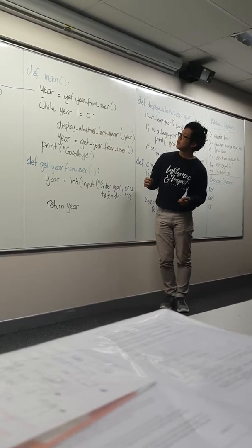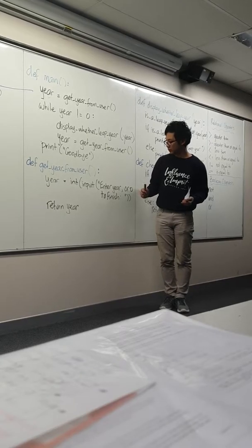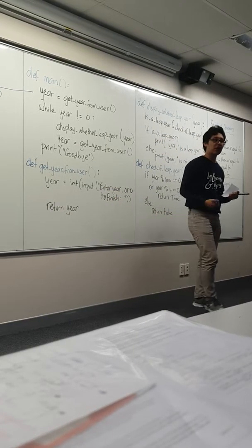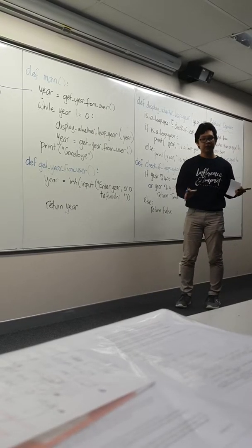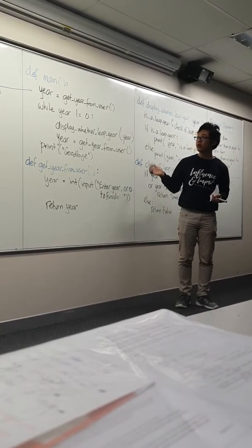While year not equals zero. Why would I need that? Well, that's because my program wants me to know that I can type in as many years as I want. And if I want to stop running the program, I can just type zero and it will finish.